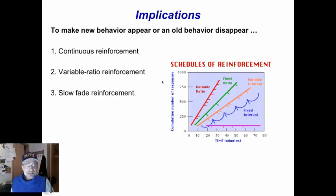So to make new behaviors appear or an old behavior disappear, use continuous reinforcement at first, but then move to variable reinforcement. Trying to get hand raising—first, you reinforce hand raising every time you see it, but then you reinforce hand raising maybe twice. Then you reinforce hand raising every three or four times and you vary it.